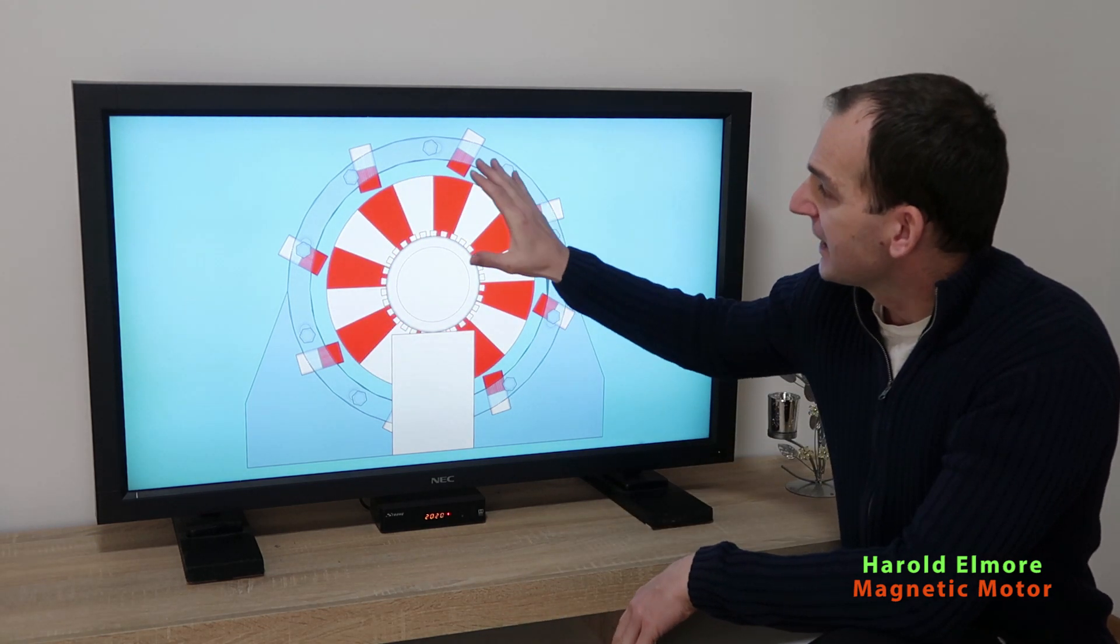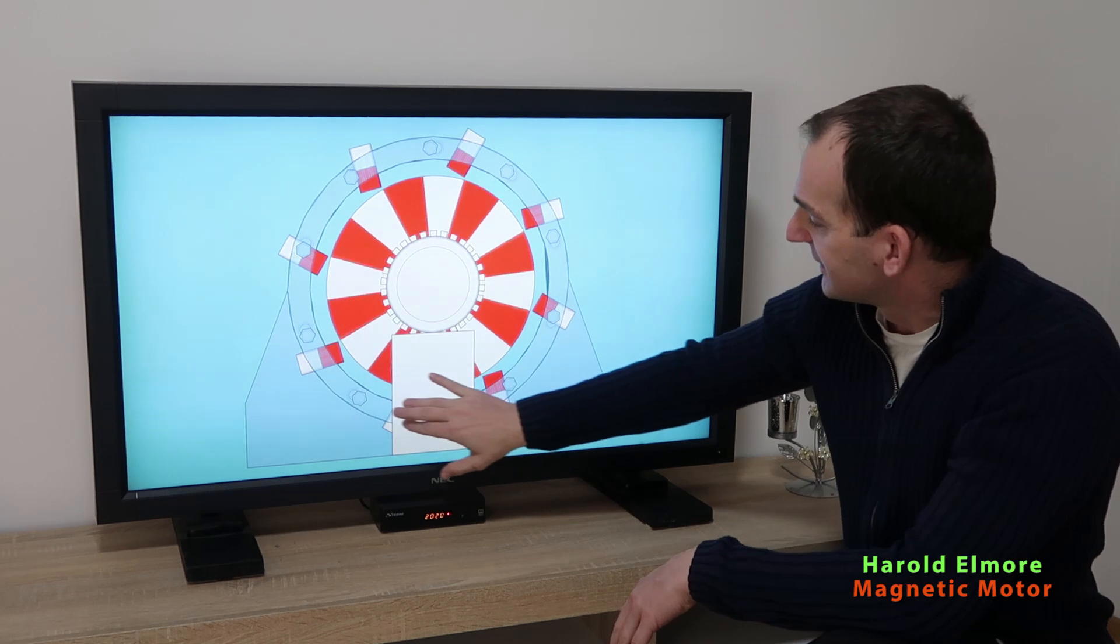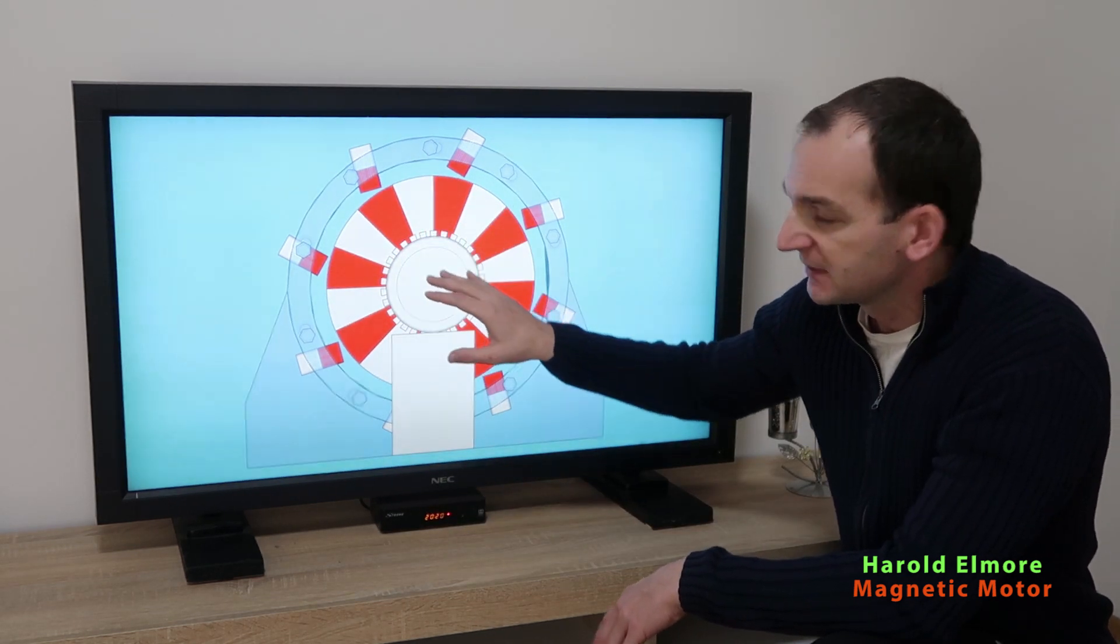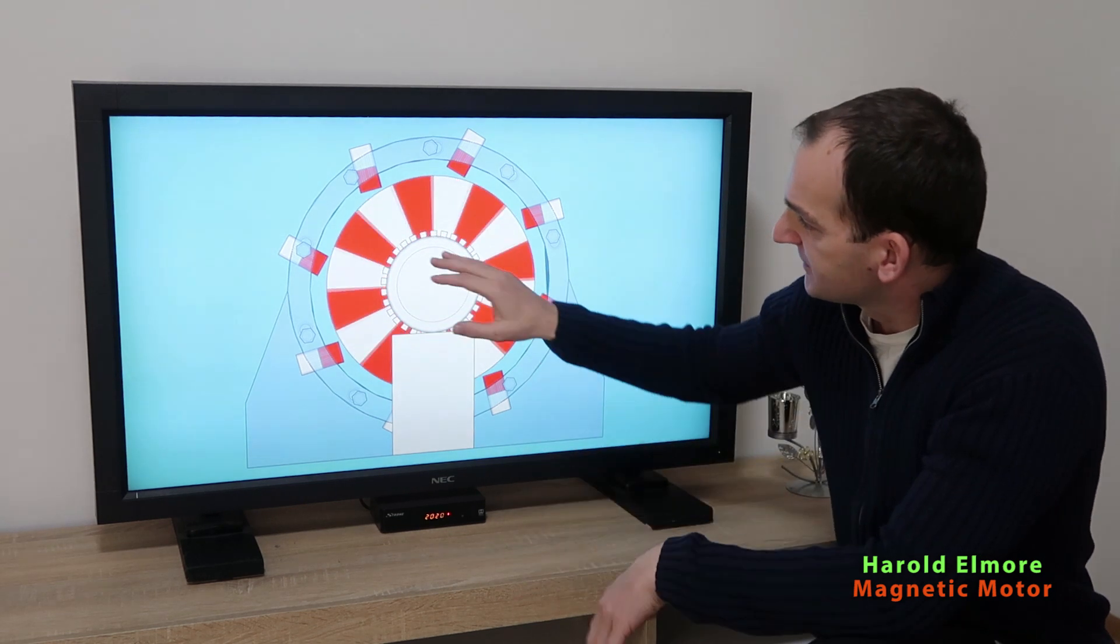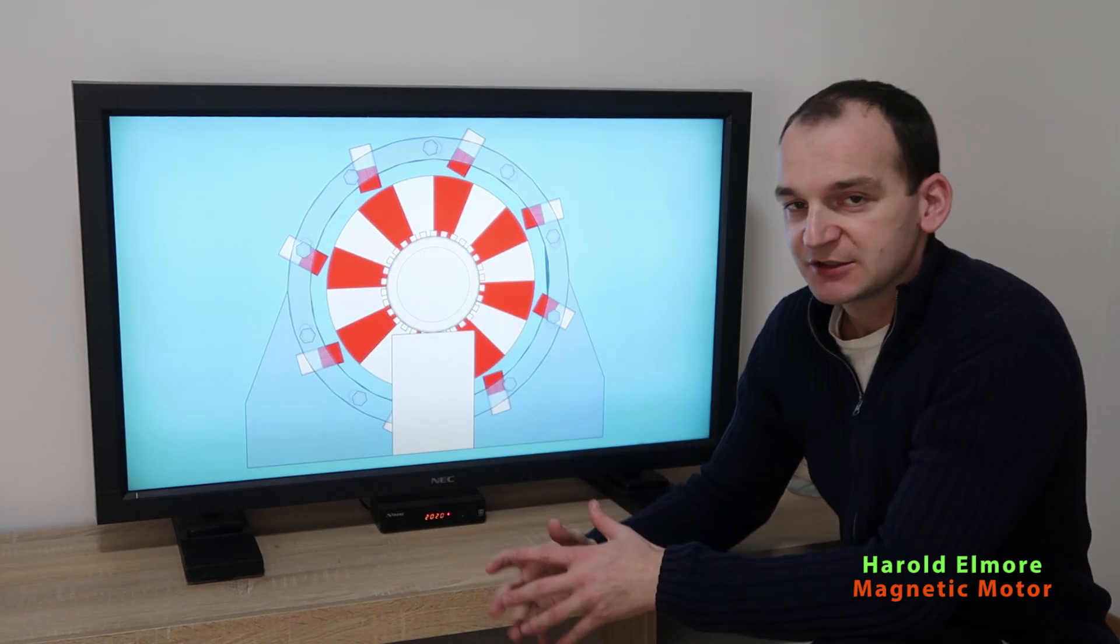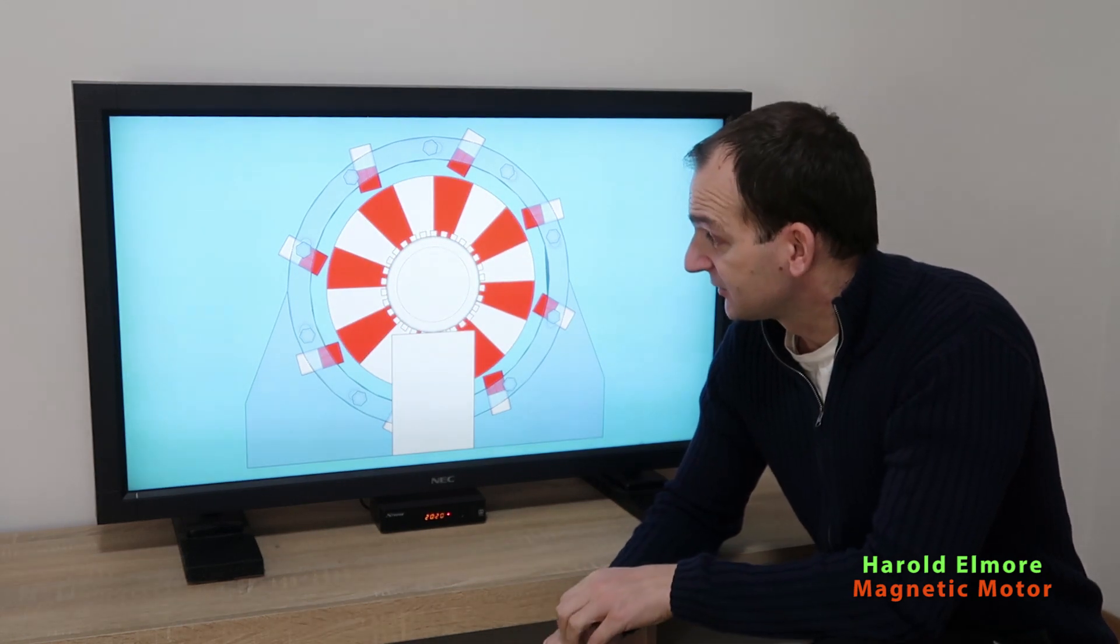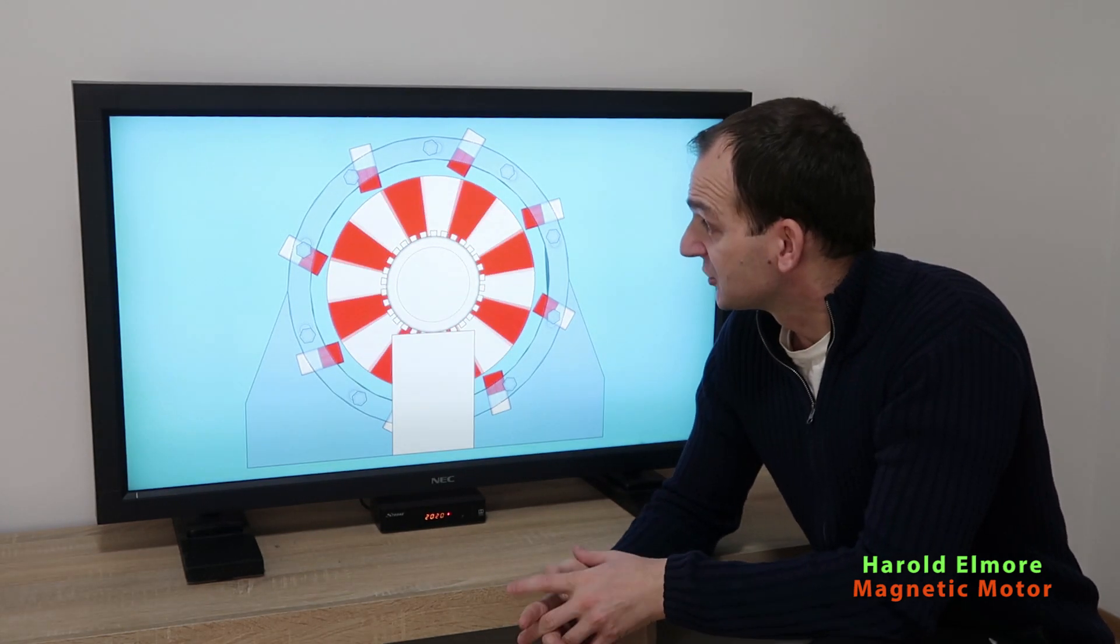So as we can see we have these permanent magnets on the stator around and we have the rotor in the middle with some kind of you see these magnets. This is the north pole, south pole, north pole, south pole. So basically these magnets are some kind of triangle shaped as you can see from the image over here.